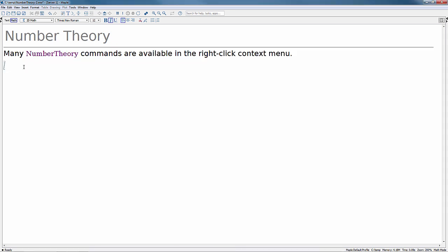Many commands from the number theory package are available in the right-click context menu. Say we're down to a fraction, something like 3 over 7. We can change the display of this fraction to something like a repeated decimal by right-clicking on the fraction and choosing to show as repeating decimal from the context menu.